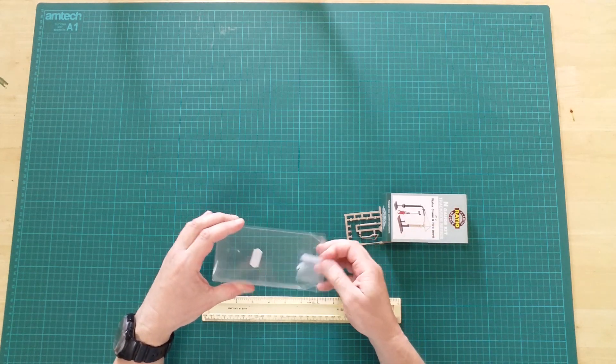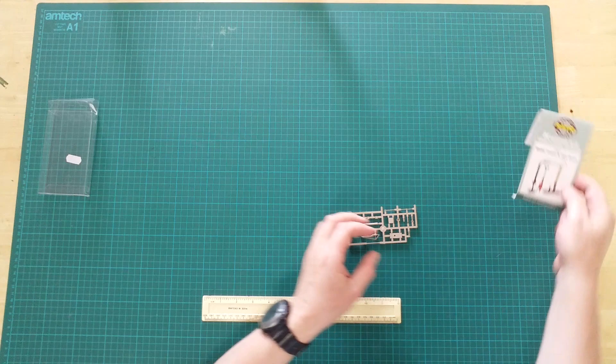In the box, you will find a plastic sprue, rubber hose and instructions.